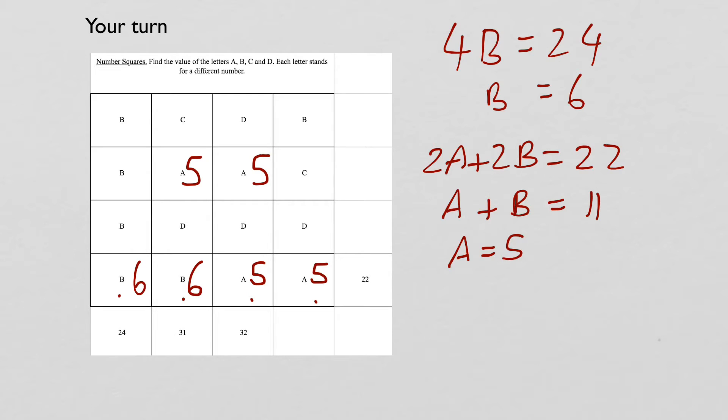Then the next thing I should do is look at a column where there's only two unknown letters. And in this case, it's this one here. So we know what a is, and we just need to work out what d is. So 5 plus 5 is 10. So 10 plus 2d equals 32. Take 10 away from both sides. 2d equals 22. So d equals 11.